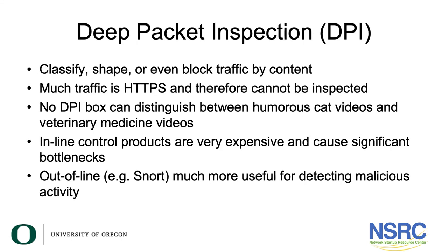Deep packet inspection is an expensive proposition. You can classify, shape, or block traffic by content, but much traffic today — actually a huge amount — now runs over HTTPS, which means it's encrypted and you can't inspect it. How do you distinguish between a humorous cat video and a veterinary medicine video? You can't. So if you're blocking videos based on content, it's likely not going to work. In-line products are extremely expensive and cause significant bottlenecks. Out-of-line products such as Snort can be very useful for detecting malicious activity, and you haven't spent nearly as much money as you would on a deep packet inspection box.